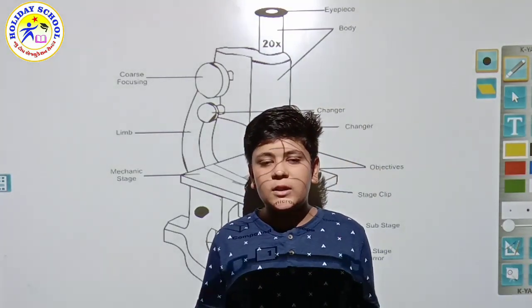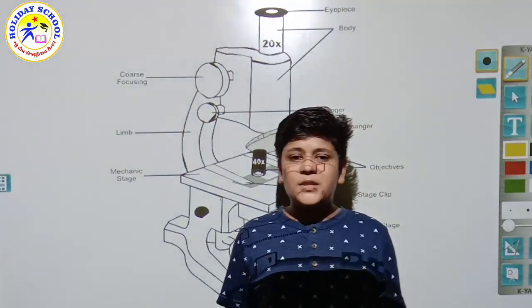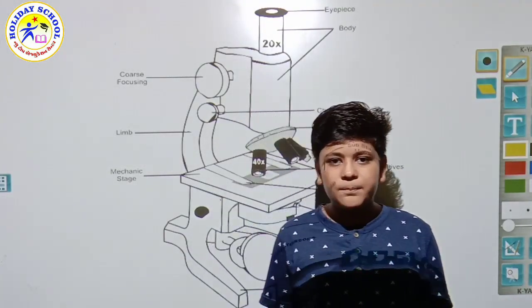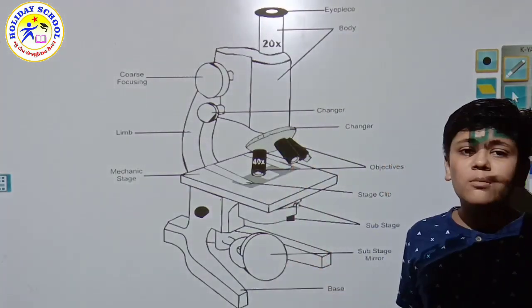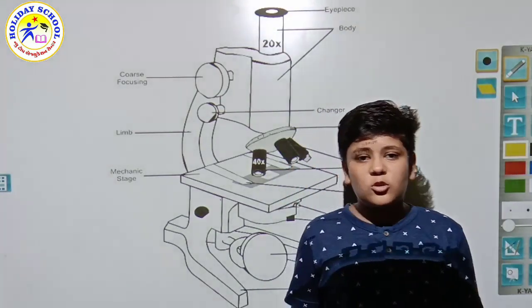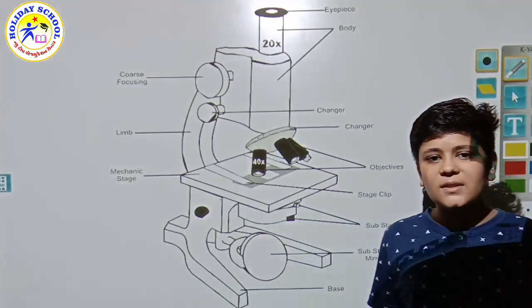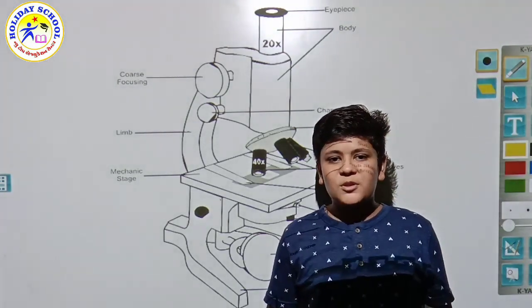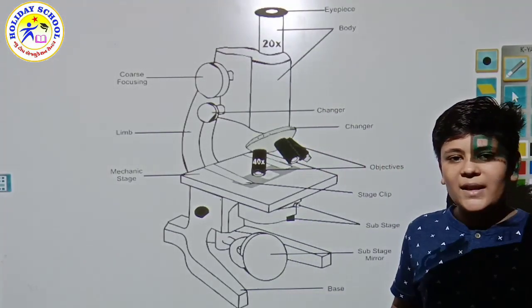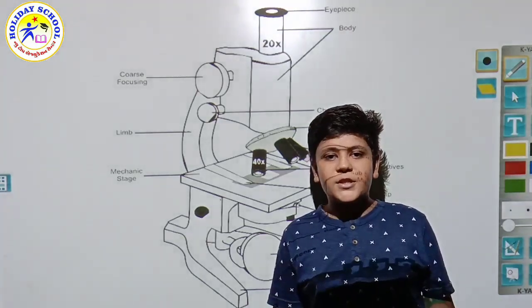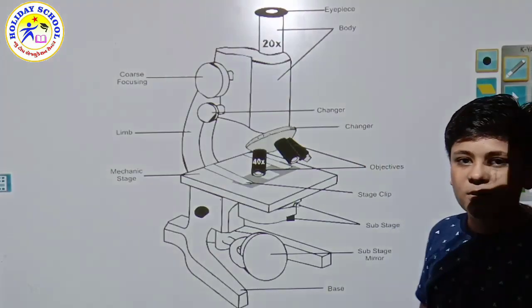Several types of different microscopes are there. There are four major important types, and this is one type: the compound microscope. This microscope contains many parts and can zoom very much, like a hundred times. So friends, let's start learning about the different parts of the compound microscope.